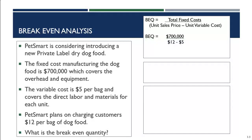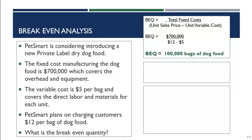The break-even quantity is 100,000 bags of dog food. PetSmart knows they need to sell 100,000 bags in order to break even — for revenue to equal costs. PetSmart would then analyze how many bags that is per store, and how many per store per month, to determine whether it's feasible.